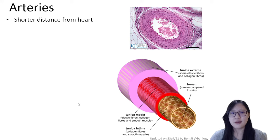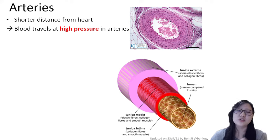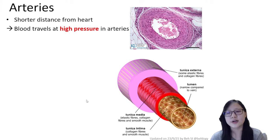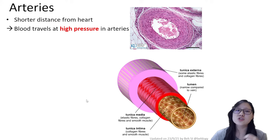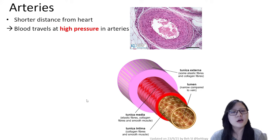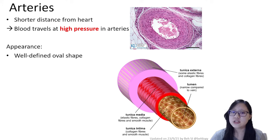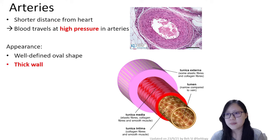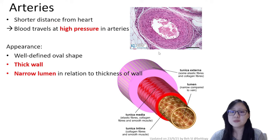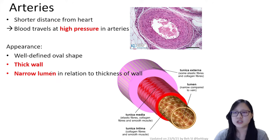Arteries are a short distance from the heart, so blood travels at very high pressure in arteries. Therefore, the structure of arteries has a certain morphology to withstand that high pressure. It usually has a well-defined oval shape, a really thick wall especially in comparison to its narrow lumen — always a proportion of thick wall to narrow lumen.